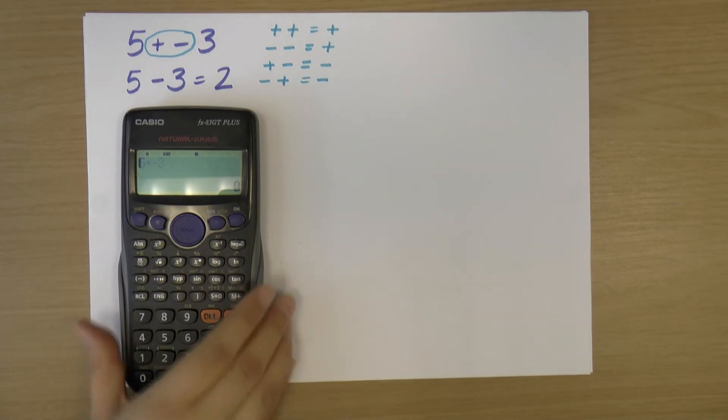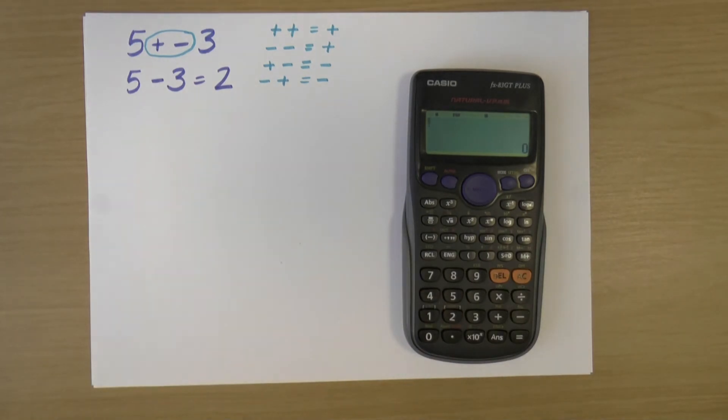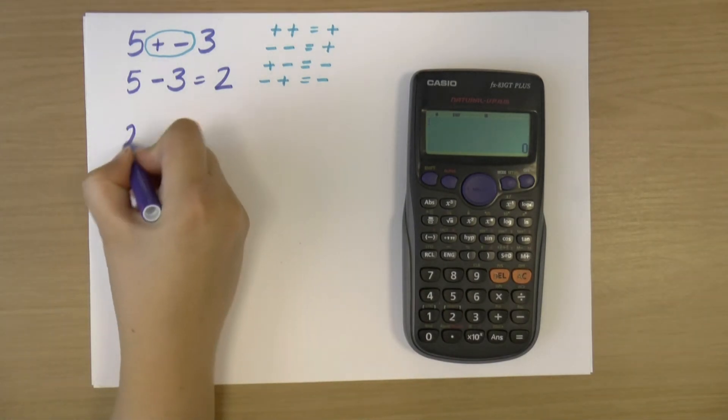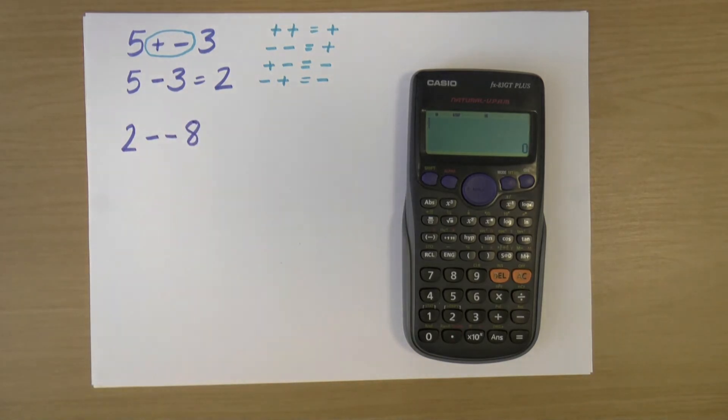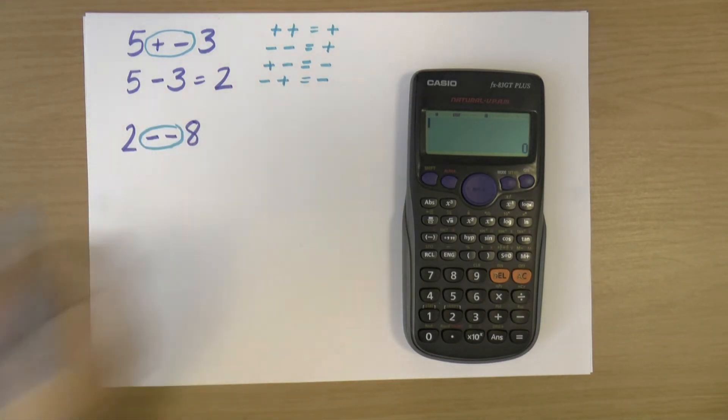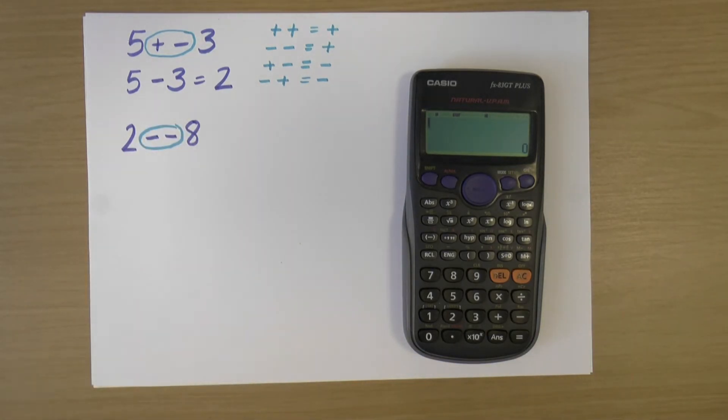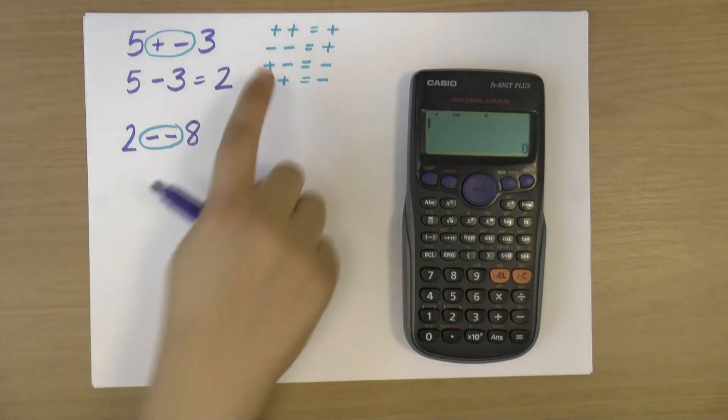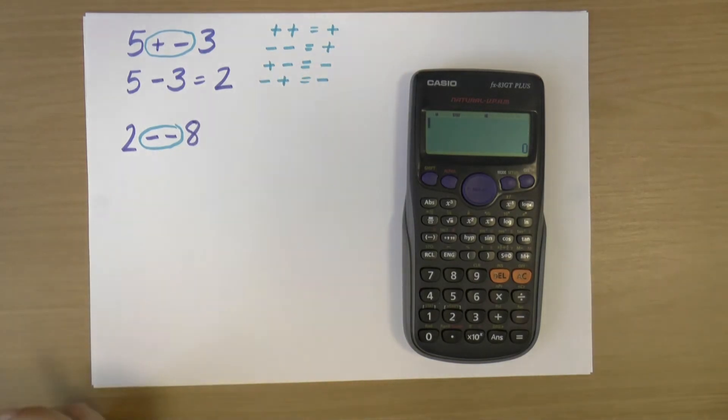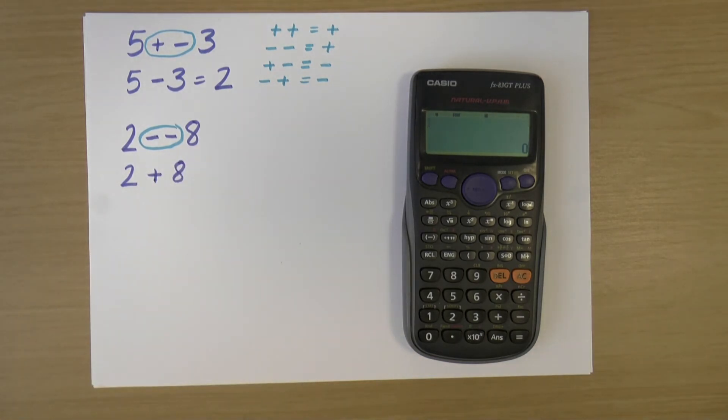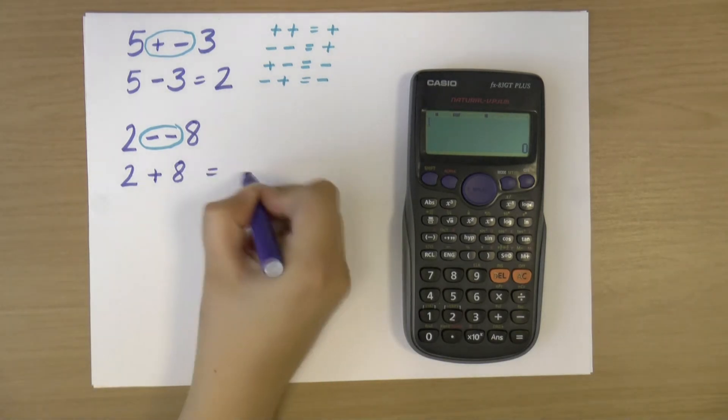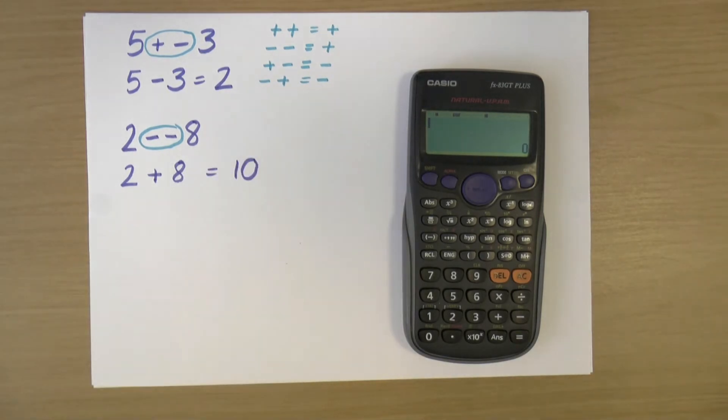Okay, let's have a look at another one. So if I have, let's say, 2 minus minus 8. Again I'm looking at these two symbols in the middle. And here I've got two negatives and two negatives make a positive. So I can replace those two symbols with a positive, which gives me 2 plus 8, which is 10.